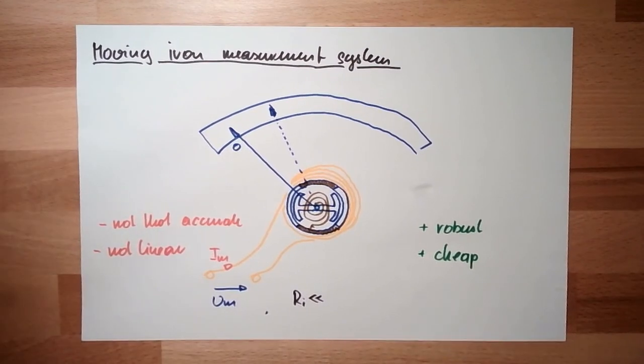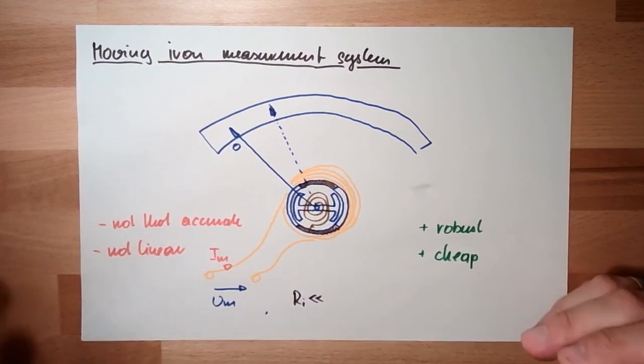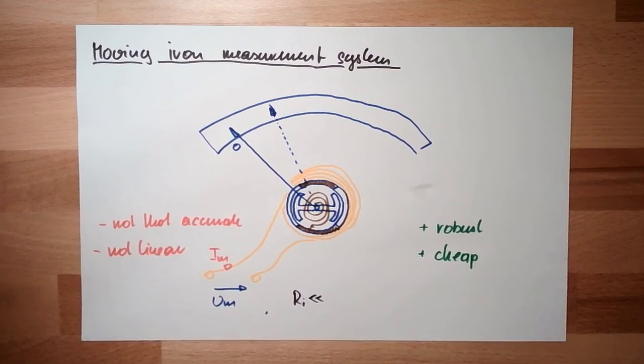Basically, that's it. It's robust and cheap, but not that accurate and not linear. This is the moving iron part.